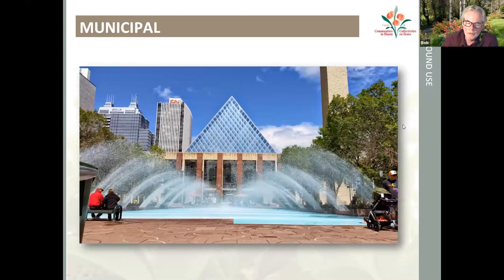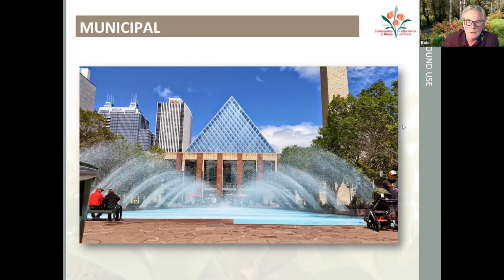And for year-round usage: demonstrate year-round opportunities and programs for education and use of parks and open spaces — urban agriculture, community gardens, parks and recreation programs. Here you have Churchill Square in Edmonton, used as a water feature during the summer. Kids play in Splash Park; during the winter it's used for ice skating, and at other times you have community events and programs for entertainment and social interaction.